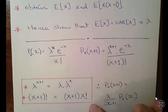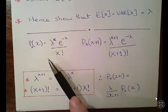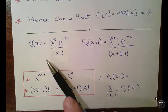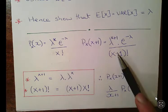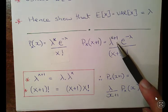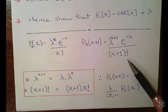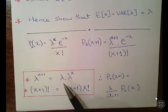So the first question: this is the probability mass function of x which we were given at the start. What we're going to do is replace the x terms with x plus 1. So we have lambda to the x plus 1 — lambda to the x becomes lambda to the x plus 1. e to the minus lambda just gets left alone. x factorial becomes x plus 1 factorial.